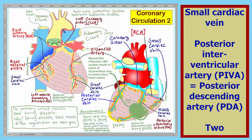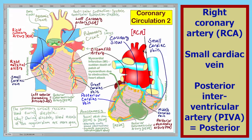Also on the rear of the heart, we have the small cardiac vein shown here and here as it circles around to the back. And we also have the right coronary artery shown here and here circling around the back.